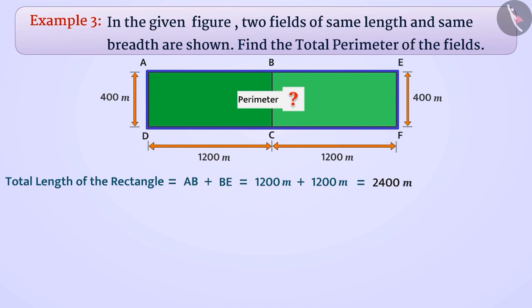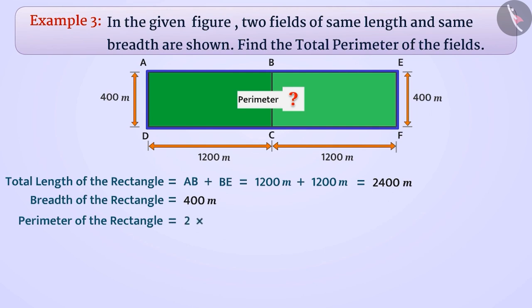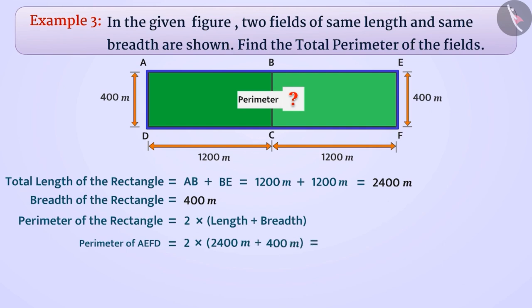There is no change in the breadth, so the breadth of the larger rectangle remains 400 meter. The perimeter of the rectangle is equal to 2 into 2400 meter plus 400 meter, which is equal to 2 into 2800 meter, which is equal to 5600 meter.